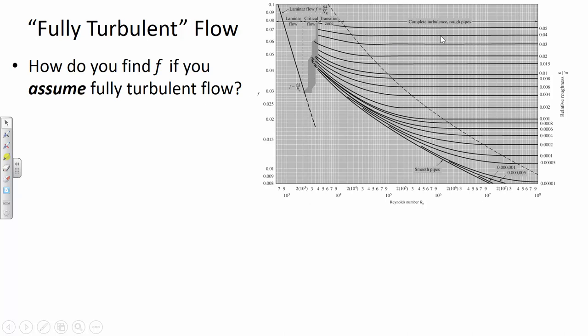Remember, the whole reason we like the Darcy-Weisbach equation is that these F values are dynamic — they allow us to understand how much energy is being lost as a function of not only the material but also the flow conditions. Manning's n value and the Hazen-Williams C value only look at material properties, not flow conditions. This is more powerful, more accurate, and more reliable. What it's saying is that the F value doesn't change once you get to a certain threshold velocity. That dividing line is sometimes called fully turbulent flow — or on the figure, complete turbulence, or a rough pipe. You need to understand this well enough to write a cogent answer explaining what fully turbulent flow is.